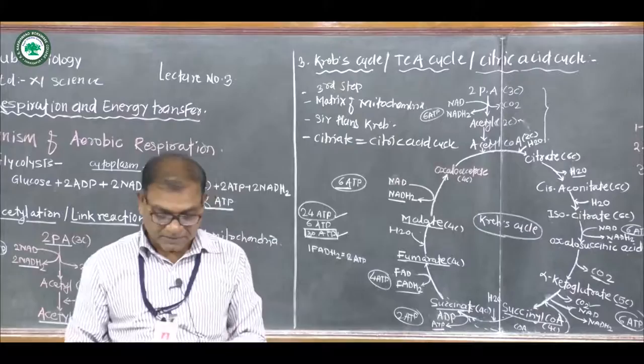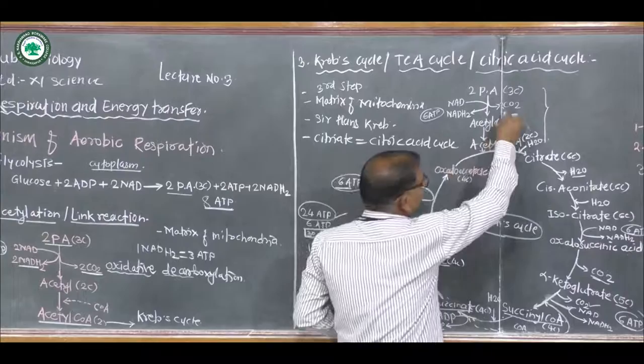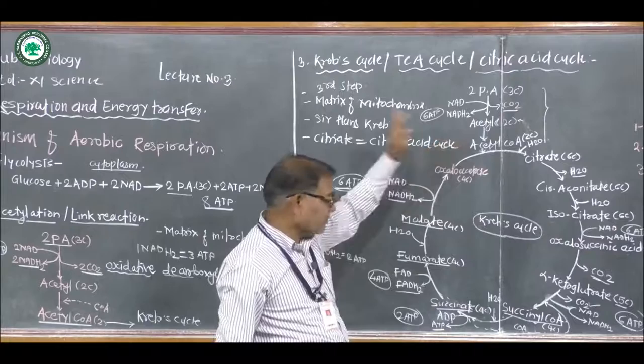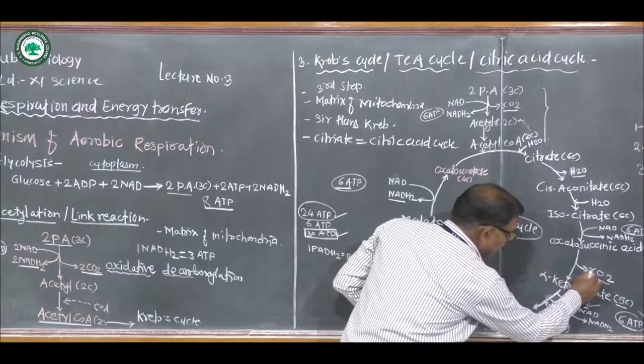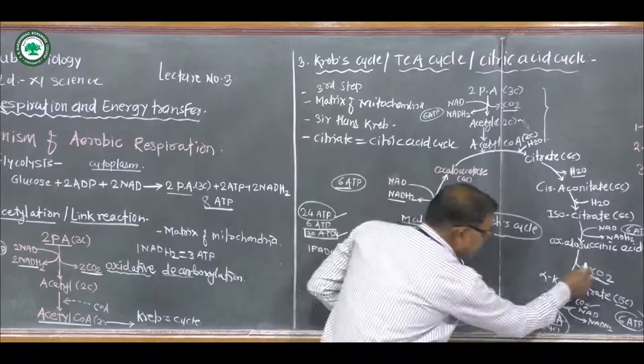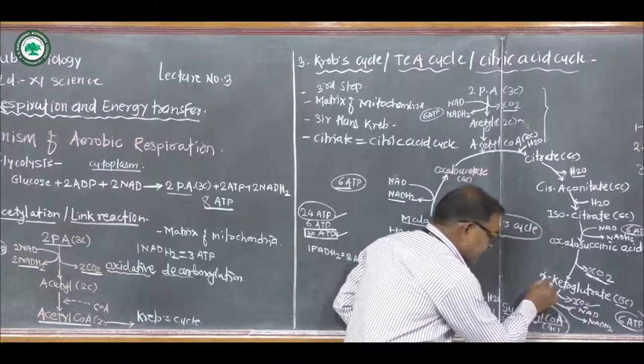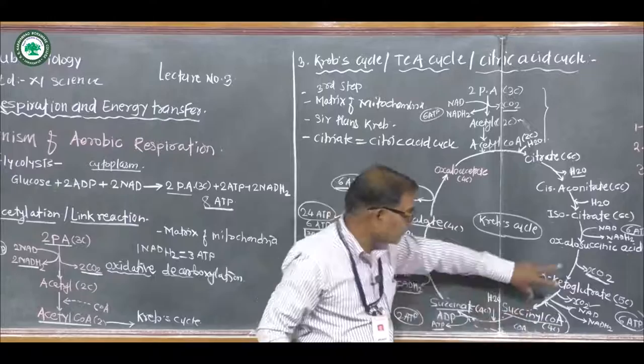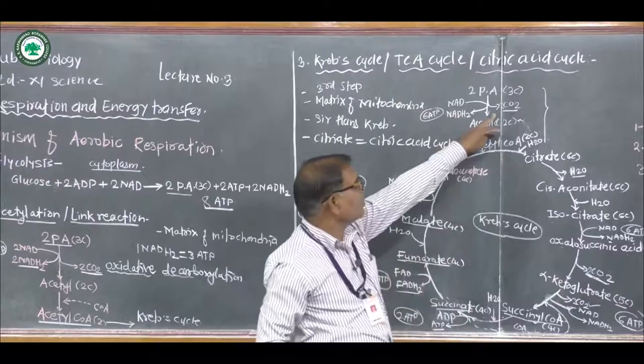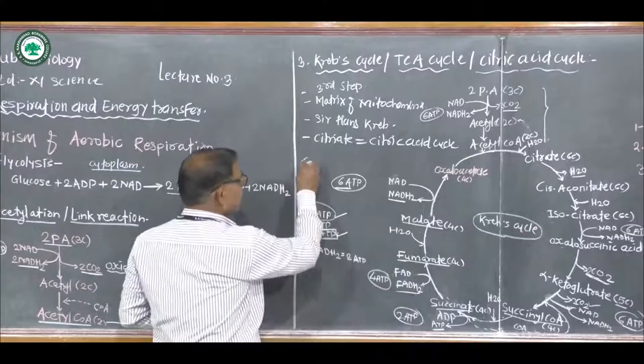How many molecules of CO2 are released? In acetylation, 2 molecules of CO2 are released. In the matrix of mitochondria: when oxalosuccinic acid is converted to alpha-ketoglutaric acid, 2 molecules of CO2 are released; and when alpha-ketoglutaric acid is converted to succinyl coenzyme A, another 2 molecules of CO2 are released. In total, 4 + 2 = 6 molecules of CO2 are released from the breakdown of pyruvic acid.